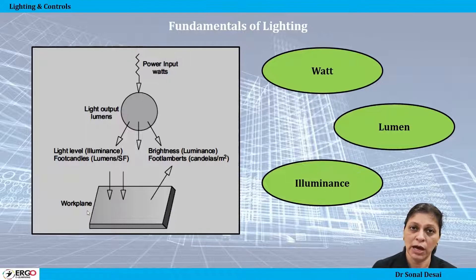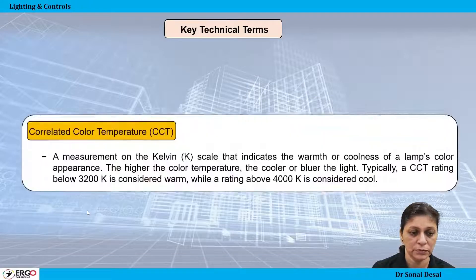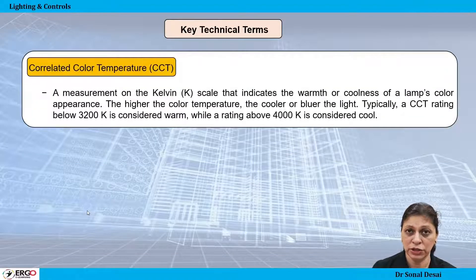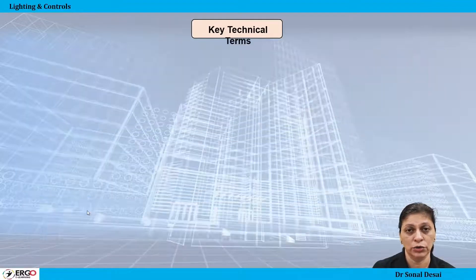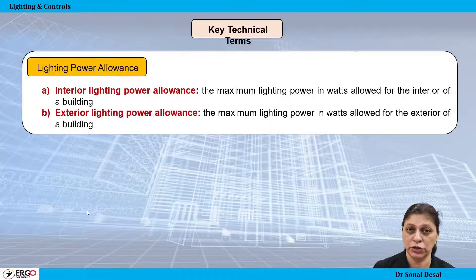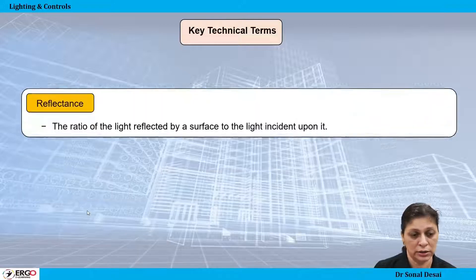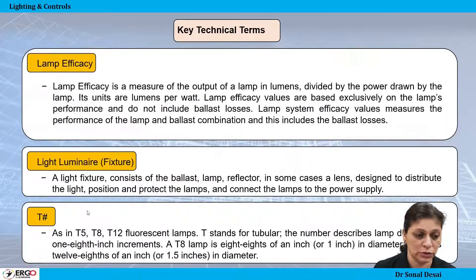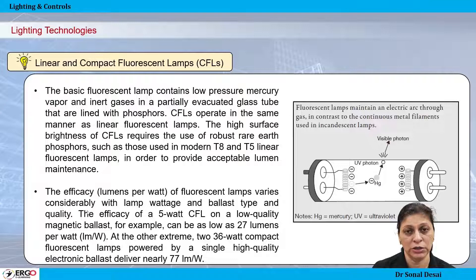The course includes fundamentals of lighting to help learners understand the basics, making it easier to adopt complex lighting concepts. Key technical terms used in lighting technology — starting with glare, reflectance, color rendering index, color temperature of the bulb, and lighting power density — are all explained in one of the video series.